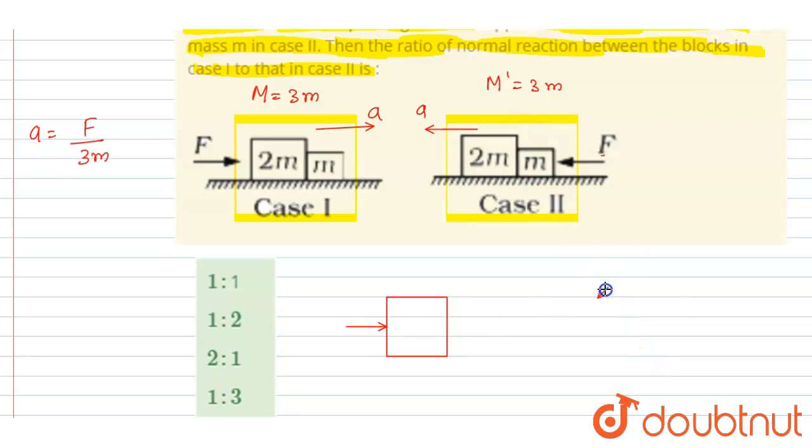on this bigger block the normal reaction will be acting towards right. If I say this is the 2m mass and here the normal reaction is acting like this. And if you see the acceleration of this and this, both are same.